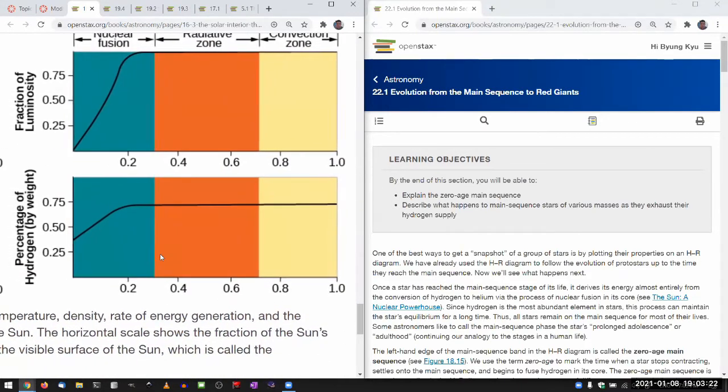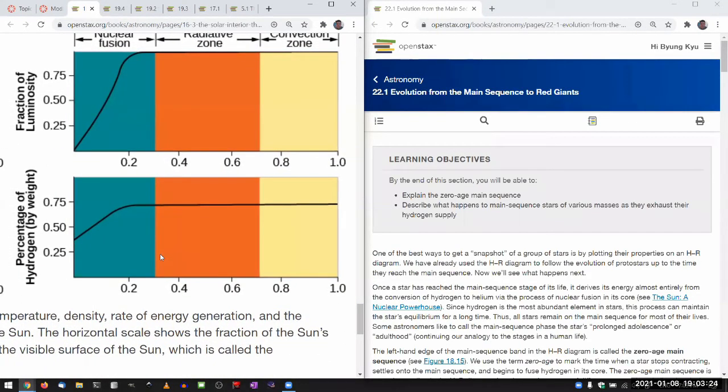So in a main sequence star like our sun, it's not uniformly the same. The core where the fusion is going on is going to start to run out of hydrogen.